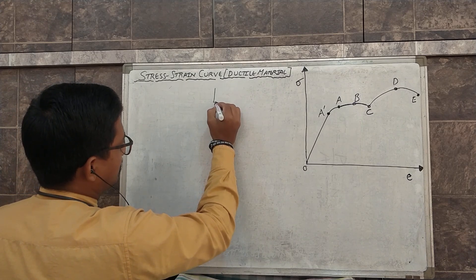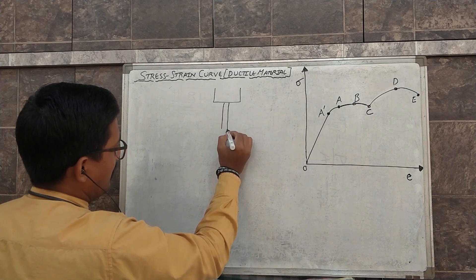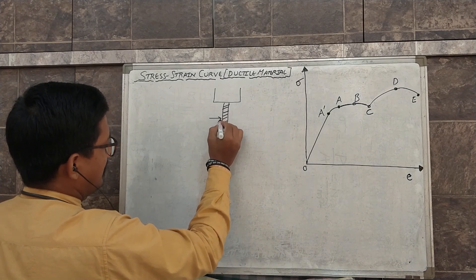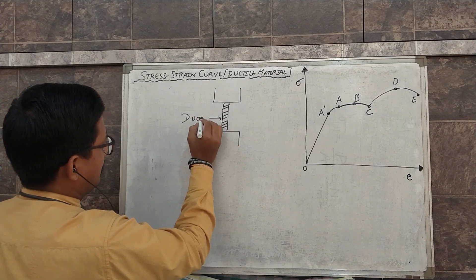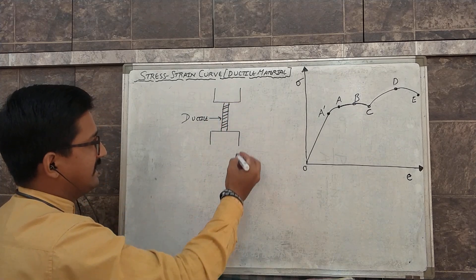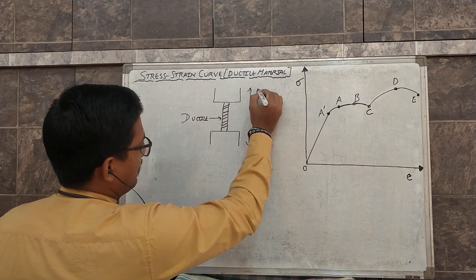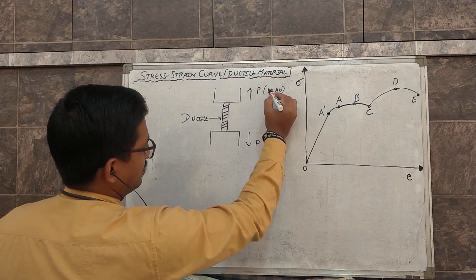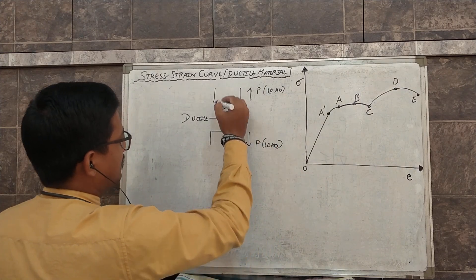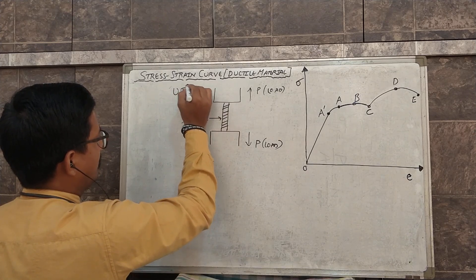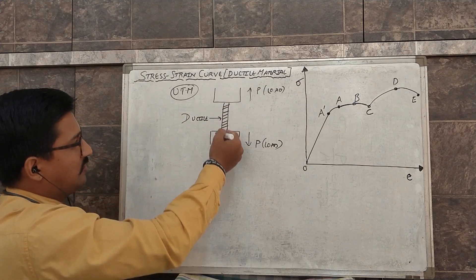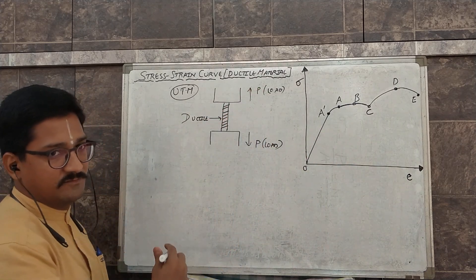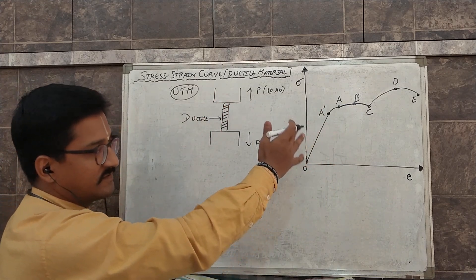Suppose this is a machine and in this machine a ductile material is being fixed for testing, and some tensile load is being applied by this machine on this specimen. This machine or arrangement is called the universal testing machine. Under this machine, how this material will behave or how it gets failed under tensile load — this is the representation of this. From this test, we have got the stress-strain curve for a ductile material.